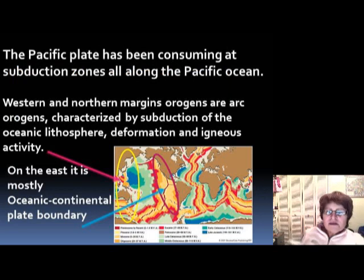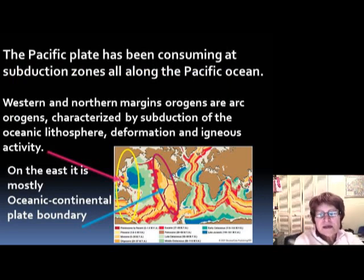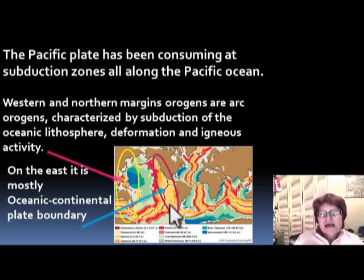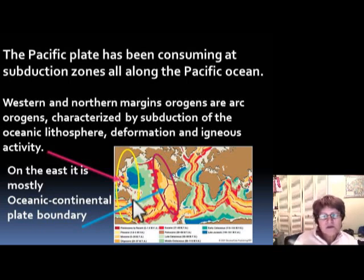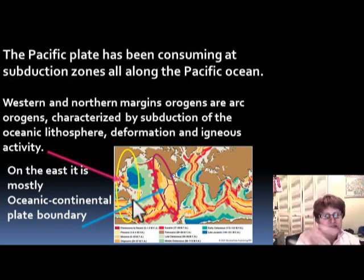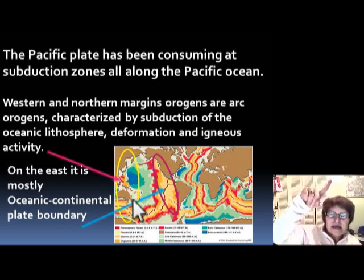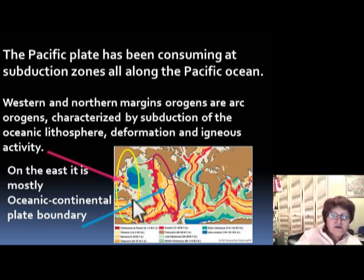The Pacific Ocean has been consumed at subduction zones all along its margins. On the west side of the Pacific, we have oceanic-oceanic plate boundaries, but on the east side, they are mostly oceanic-continental plate boundaries — like the Andes Mountains, and in Washington and Oregon in North America, also oceanic-continental plate boundaries.